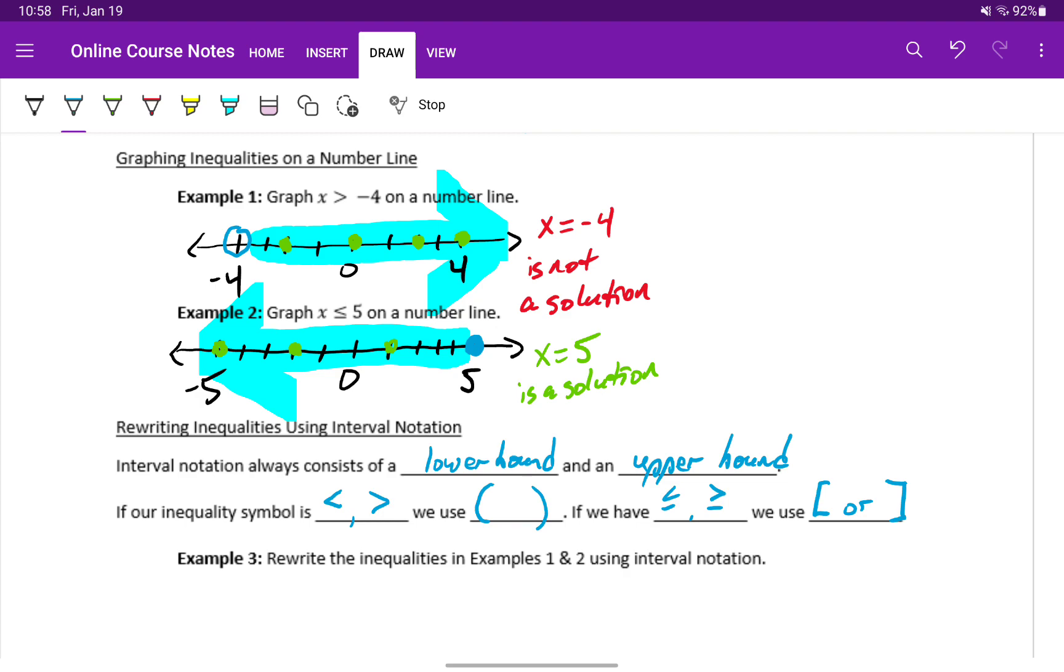Similar to using an open circle when we have a strict inequality, we use rounded parentheses. When we have that or equal to portion, we use square brackets.